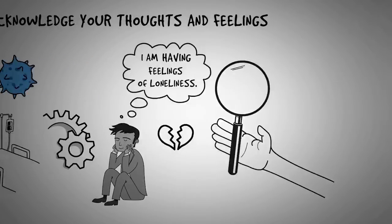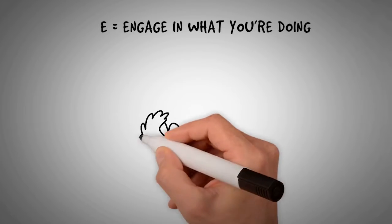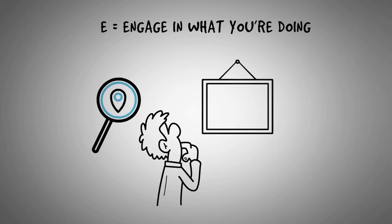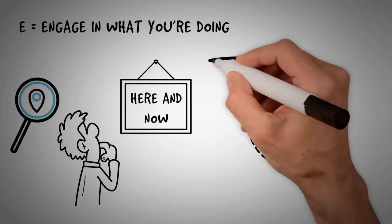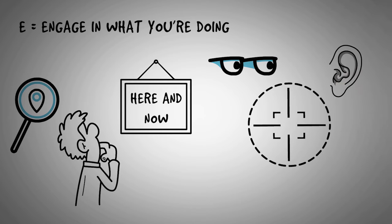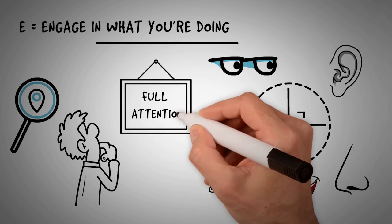And as you acknowledge your thoughts and feelings and come back into your body, you then move to E, which is for engage in what you're doing. Get a sense of where you are, here and now, and refocus your attention on the activity at hand. Notice five things you can see, five things you can hear. Notice what you can touch and taste and smell. Notice what you are doing and give your full attention to that activity.